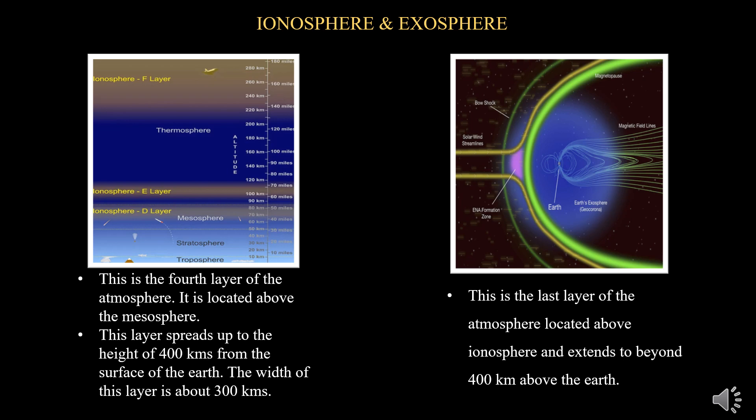The ionosphere is the fourth layer of the atmosphere, located above the mesosphere. This layer spreads up to a height of 400 kilometers from the surface of the earth, with a width of about 300 kilometers. The temperature starts increasing again with increasing height in this layer. Electrically charged current flows in the air in this sphere. Radio waves are reflected back to the earth from this sphere, and due to this, radio broadcasting has become possible.